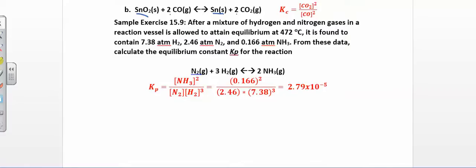The only things that can go in the equilibrium constant expression are equilibrium concentrations or equilibrium pressures. In this problem, they ask you to calculate Kp given equilibrium pressures. You have a mixture of hydrogen and nitrogen gases allowed to reach equilibrium at a certain temperature. The equilibrium pressures are 7.3 atm of hydrogen, 2.46 atm of nitrogen, and 0.166 atm of ammonia. The first thing you want to do is set up your equilibrium constant expression — products over reactants raised to those stoichiometric coefficients.